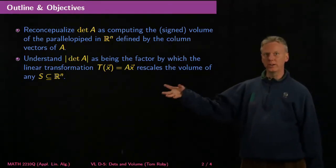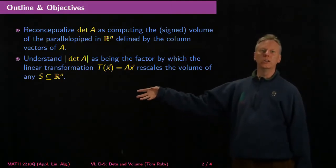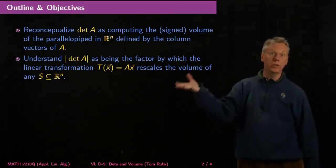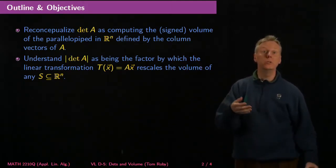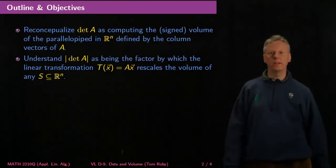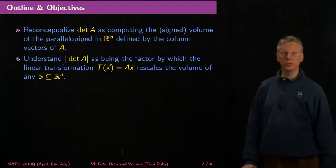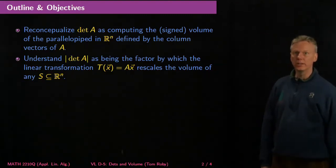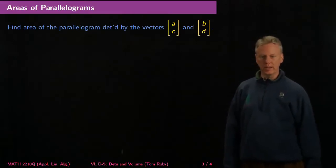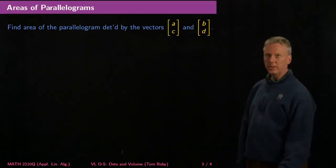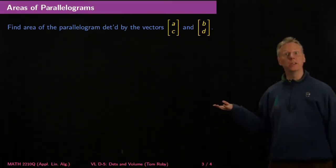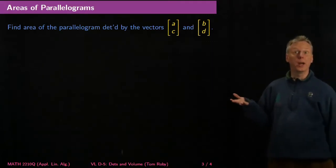So if you've got a measurable set in R to the n and you look at how the linear transformation takes it — if the determinant of that linear transformation is minus 2, then it's basically blowing things up by a factor of 2 in terms of area. Let's start with a simple example: suppose I want to find the area of the parallelogram,